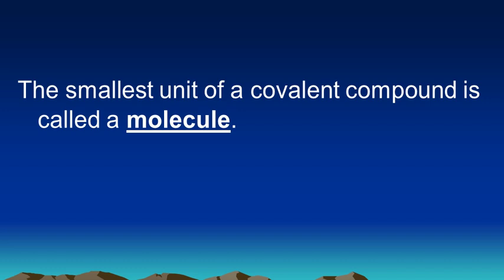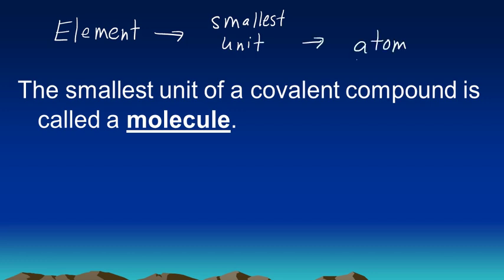You might remember that if we take an element, something we learned in an earlier chapter, and we divide it down to its smallest possible unit, the smallest unit of an element that still retains the properties of that element is called an atom.